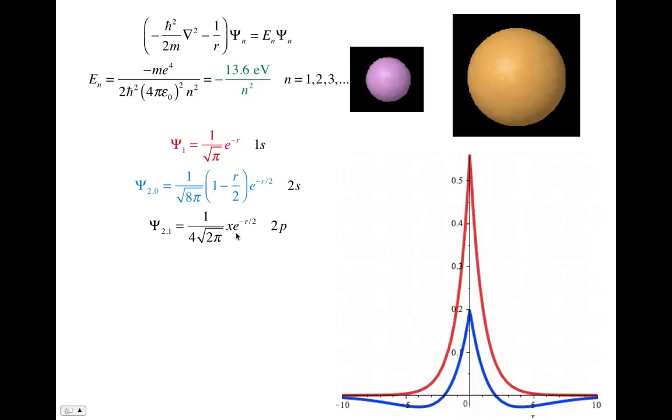And then the 2p orbital, which turns out to have the same energy as the 2s orbital for the hydrogen atom. And so you can see the plot here for the 1s and the 2s. This is the 1s and this is the 2s.